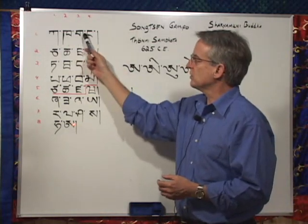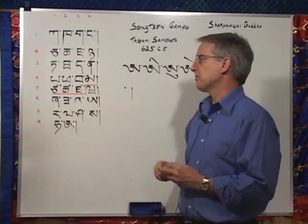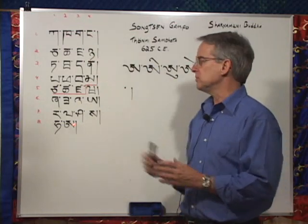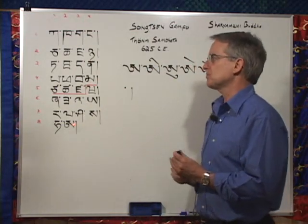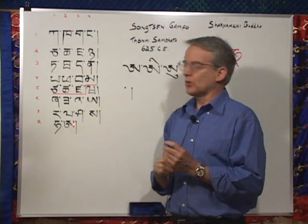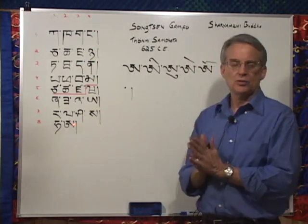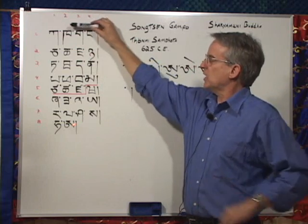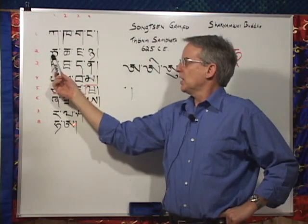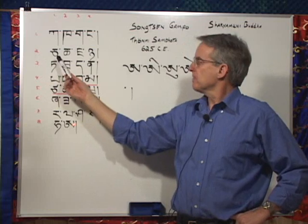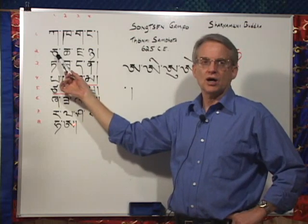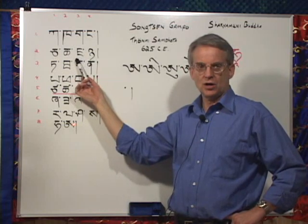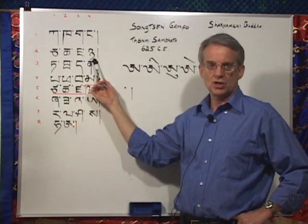The first two are high, the second two are low in tone. That's true for all the letters down to the dividing line. The second row, the cha row, the sounds have those same qualities as to high or low, but they're made at the roof of the mouth. So the first one is cha, the second cha, the third ja, and the fourth nya.